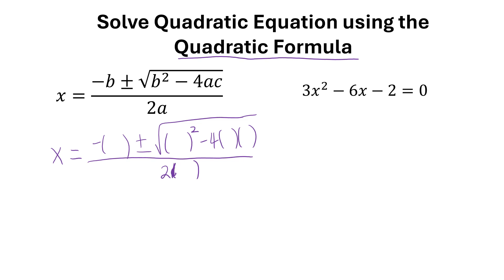Make sure before you identify a, b, and c that the equation is set equal to zero. Our equation is already set equal to zero, so I can go ahead and identify my a, which is the number in front of x squared — that's 3. Then b is the number in front of x, so that's negative 6. And c is the constant, which is negative 2.